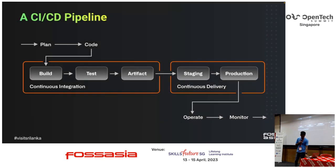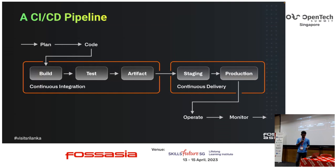Typically, a CI/CD pipeline can contain two phases. One is where you build, test, and generate artifacts. The second phase is CD — where you grab those artifacts and deploy them to a server or another environment.